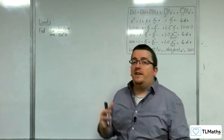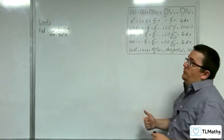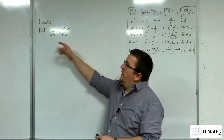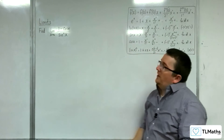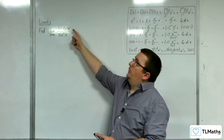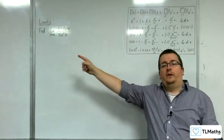In this video we're going to see another example of using the Maclaurin series to evaluate a limit. Find the limit as x tends to 0 of 1 minus cosine x over sine squared x.